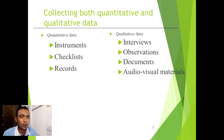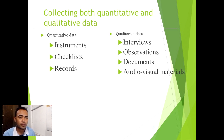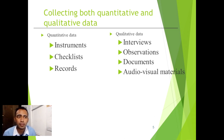For collecting both quantitative and qualitative data — in collecting quantitative data, these are the things we can use: instruments, checklists, and records. For qualitative data, we can gather data through interviews, observation, documents, and audiovisual materials, because audiovisual materials cannot be gathered as numbers and qualitative data covers audiovisual materials.